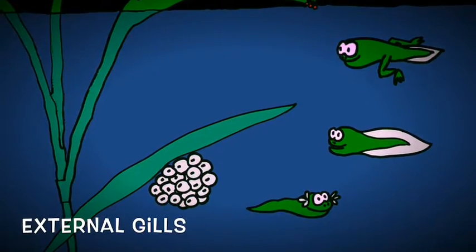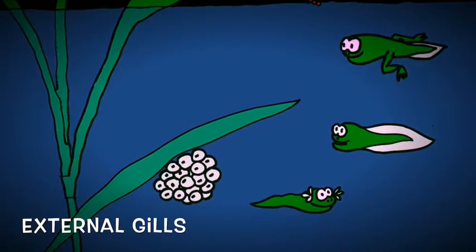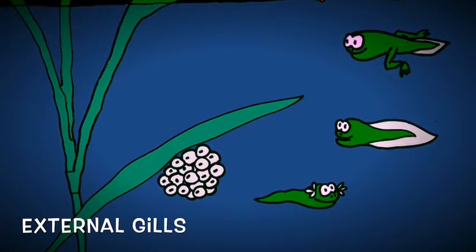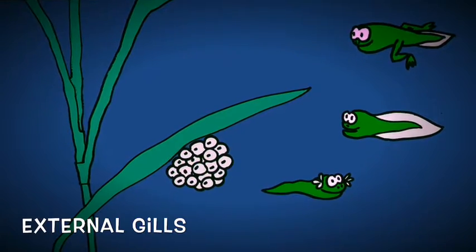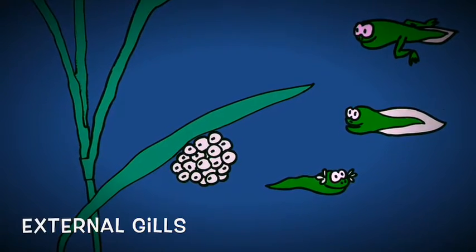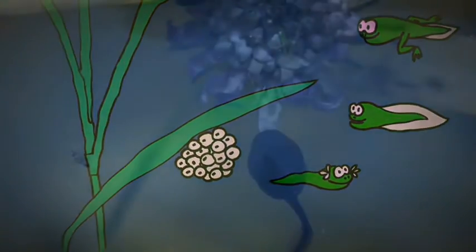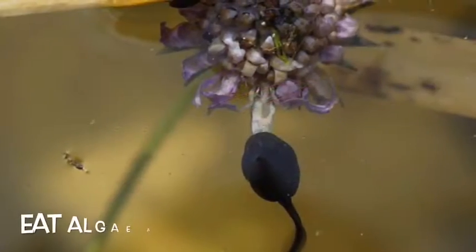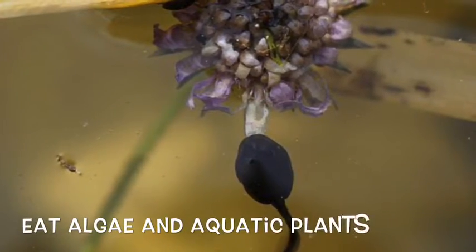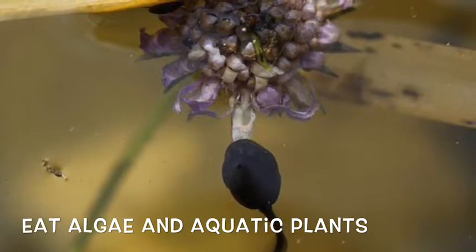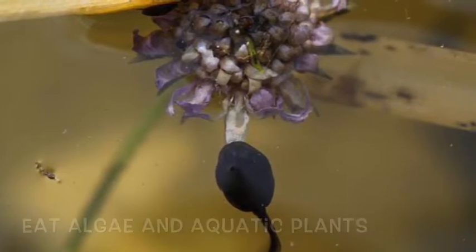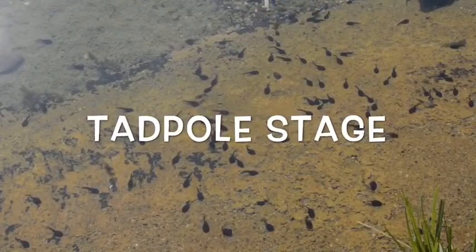The tadpoles breathe with external gills, which can be seen here as the white feathery structures on either side of their heads. They eat algae and other aquatic plants in order to grow bigger. At this stage they are called a tadpole.